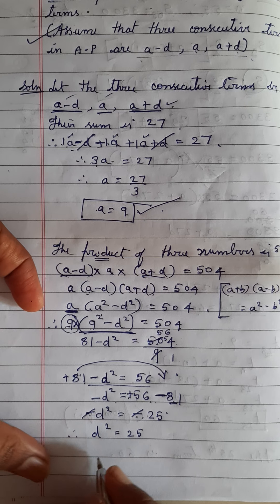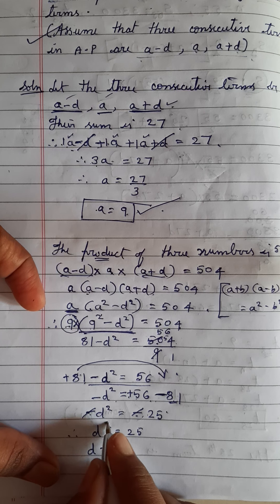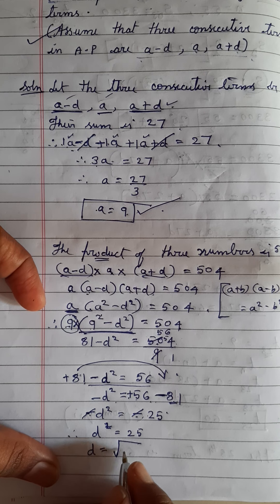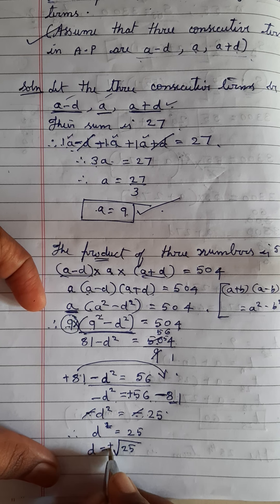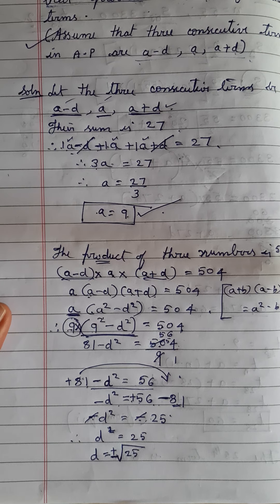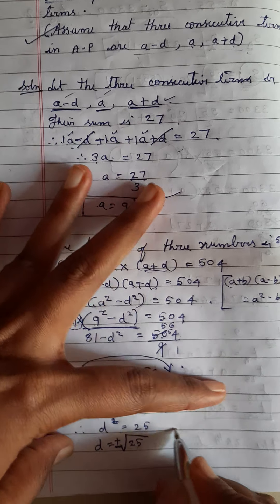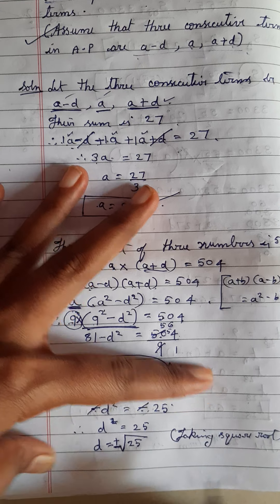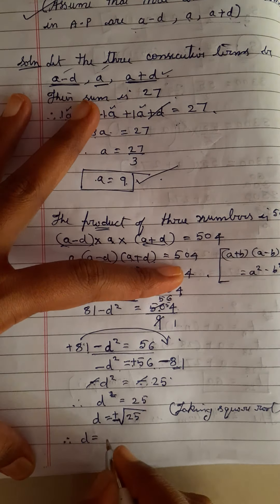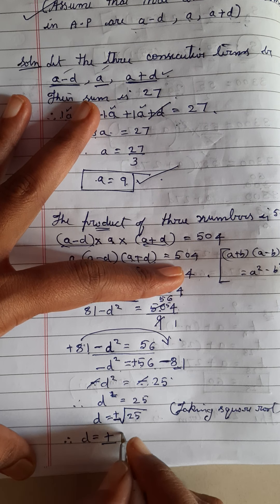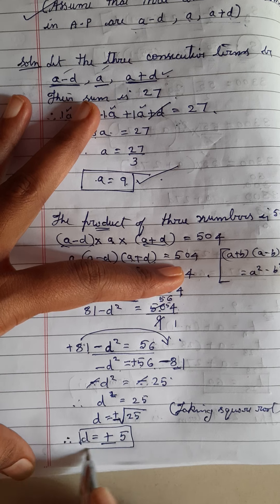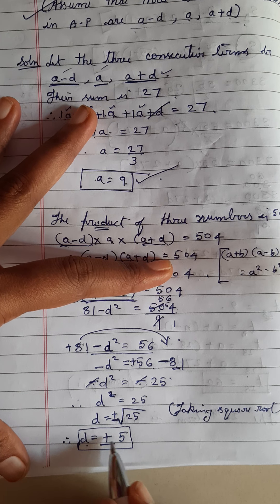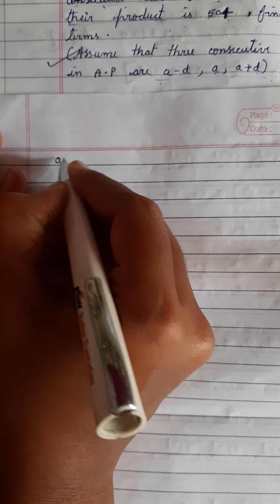If d² = 25, then d = √25. Taking the square root, both positive and negative signs are applicable. Therefore, d = ±5.